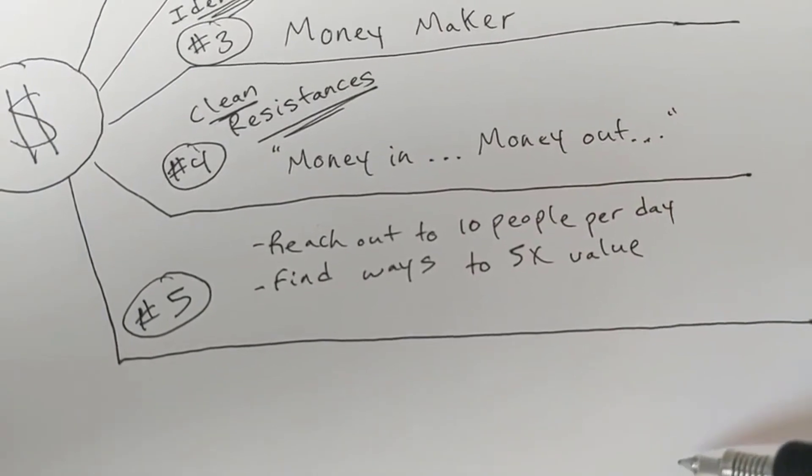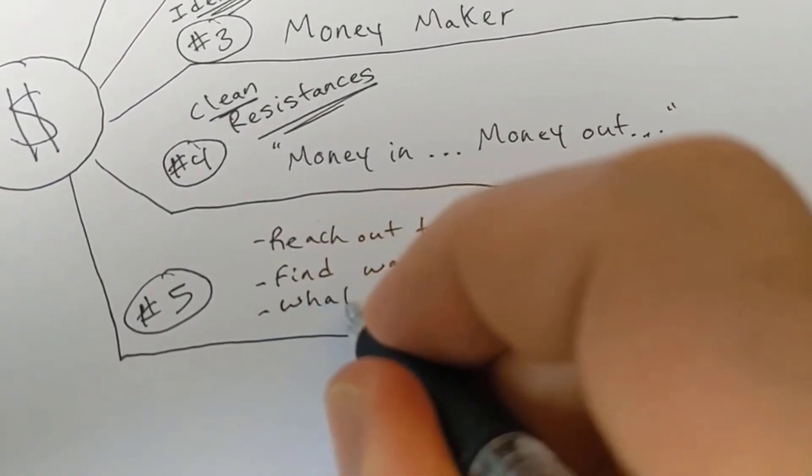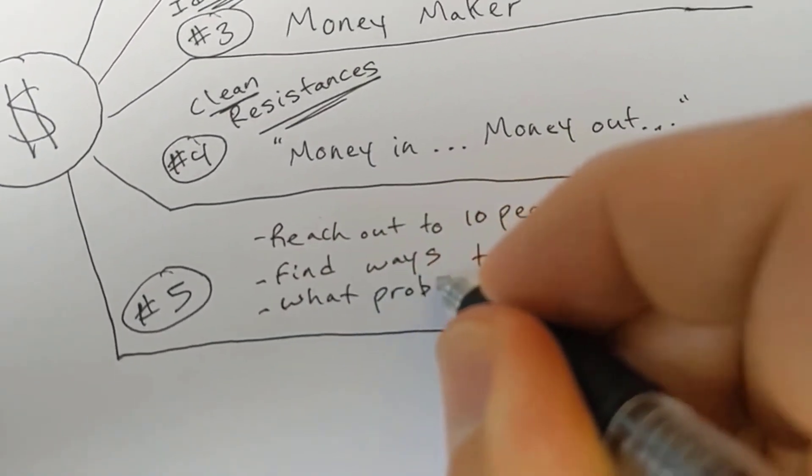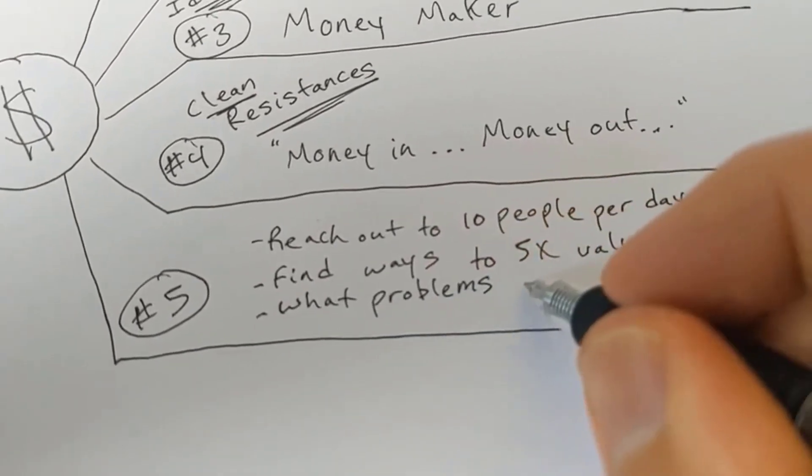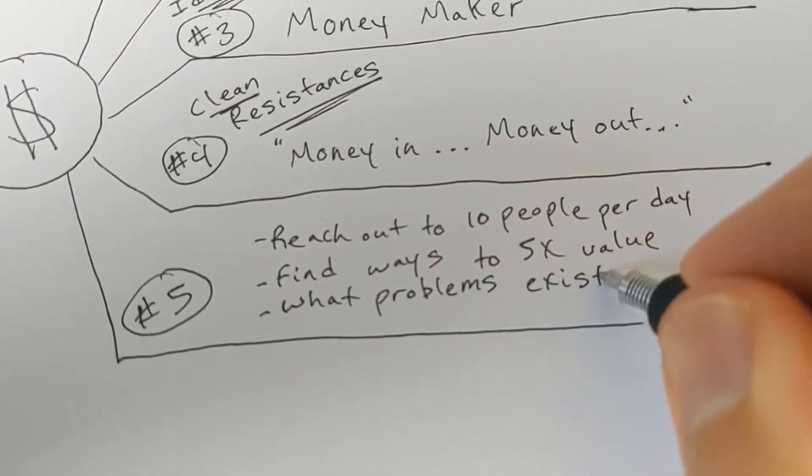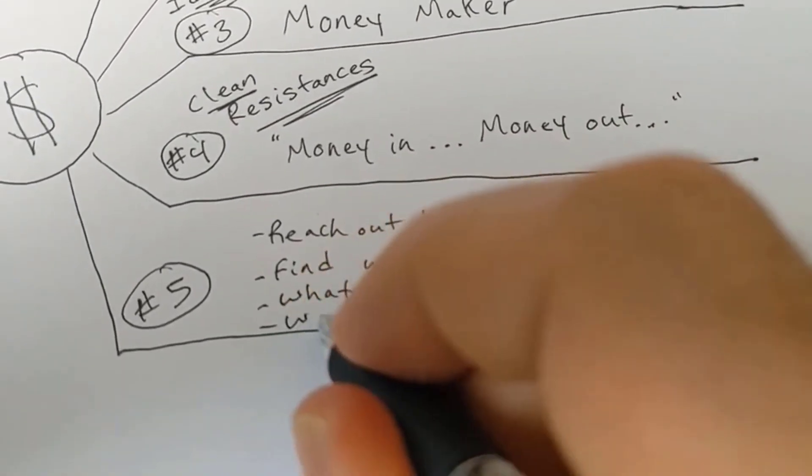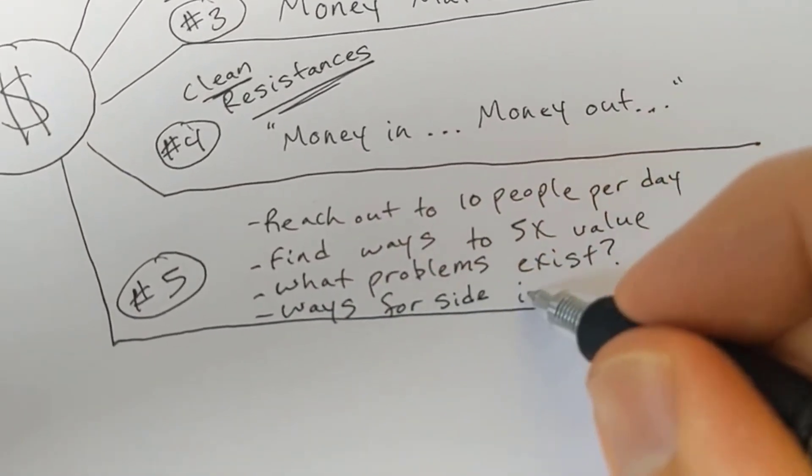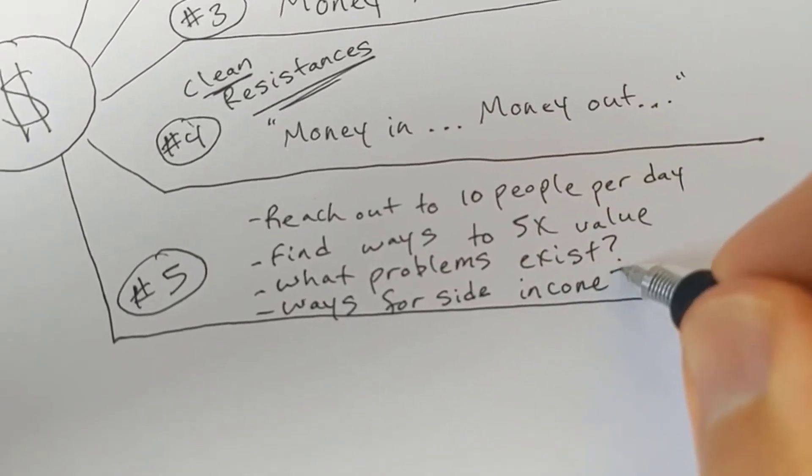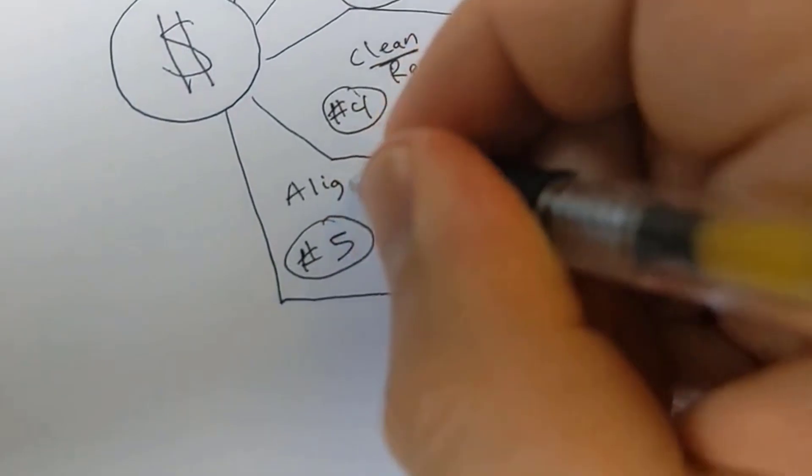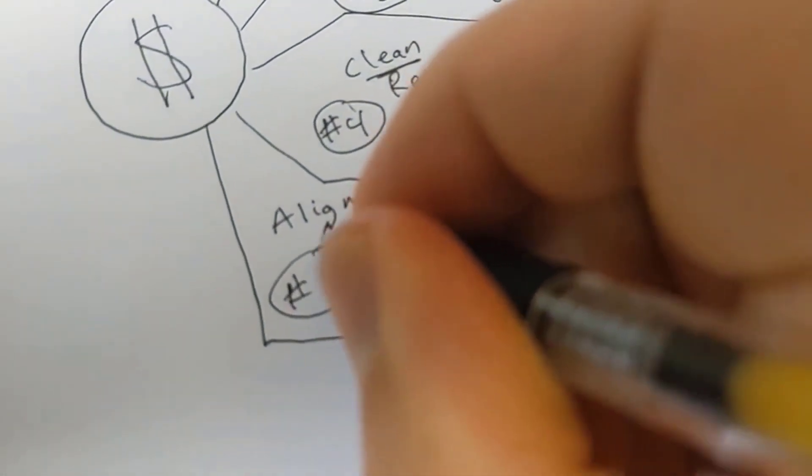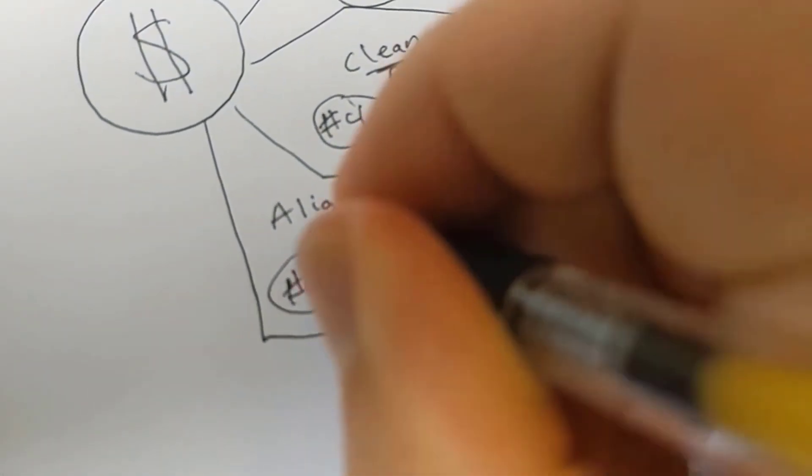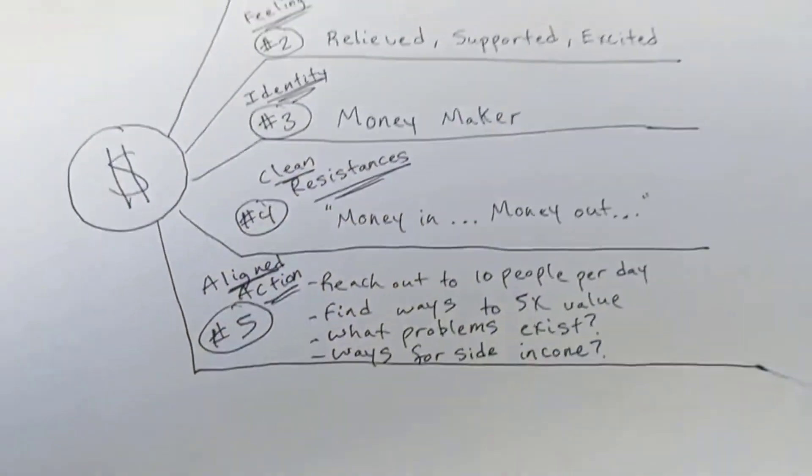Number two, you might find ways to provide more, five times more value to your audience, if you have one or clients, or even to your company that you work for right now. You want to ask yourself what problems exist? What could I solve in exchange for money? And what ways are there for side income? How could I generate an extra $500? So you're putting your mind on a money frequency. So action is absolutely a part of the process. And you're allowing yourself to take aligned actions towards your intention.